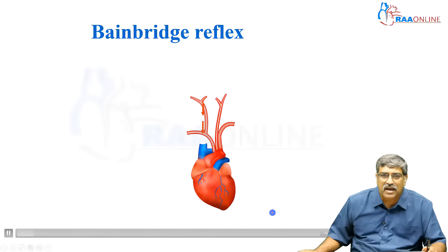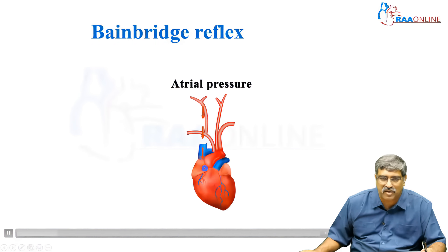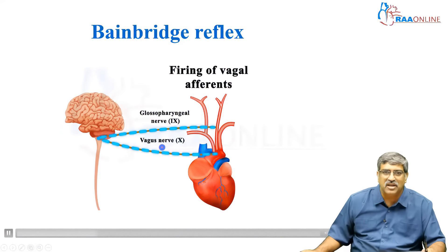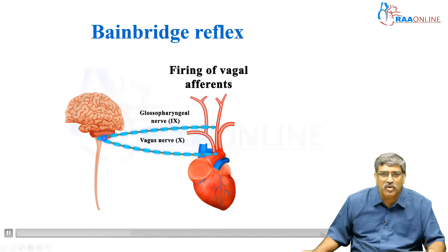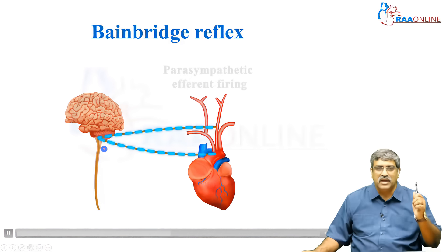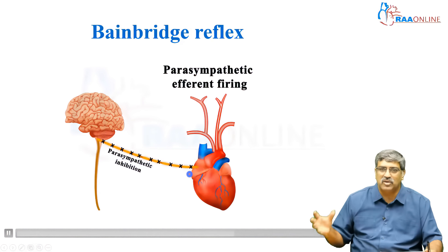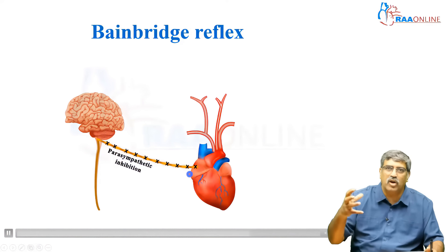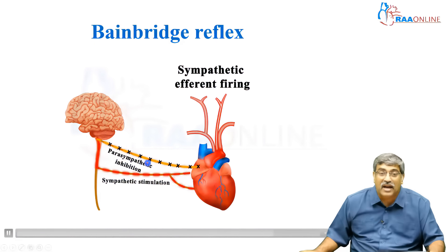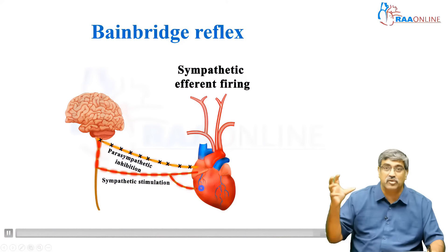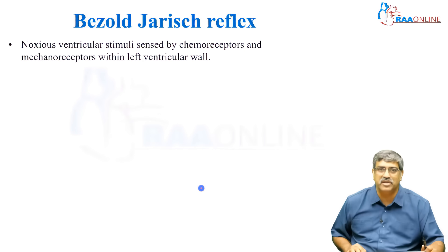As the atrium gets stretched — right atrium with some volume overload — the atrium gets stretched, the afferent signal goes to the medulla, and from the medulla there is parasympathetic inhibition. This parasympathetic inhibition feeds back and increases the rate, so that as the rate increases, the volume gets flushed out. Sometimes there can be sympathetic stimulation also which can increase the rate and contractility to send the volume out — that is the Bainbridge reflex.